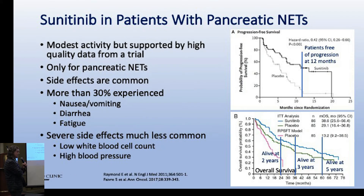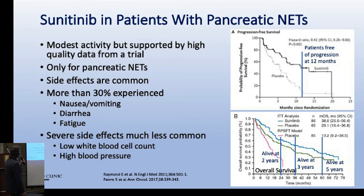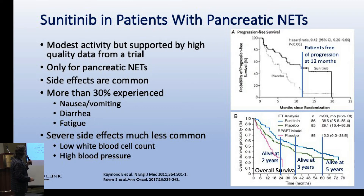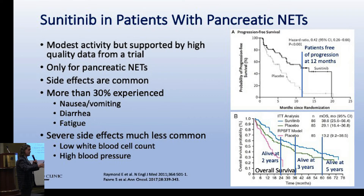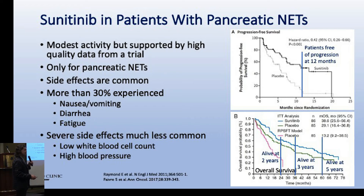Looking at the clinical trial data - for sunitinib, patients with pancreatic neuroendocrine tumors were given either placebo or sunitinib, then followed with scans. The metric we use is progression-free survival. At 12 months, about half the patients on sunitinib still had tumors that were not growing, while almost all patients on placebo had growing tumors at 12 months. These survival curves tell us how effective these drugs are.